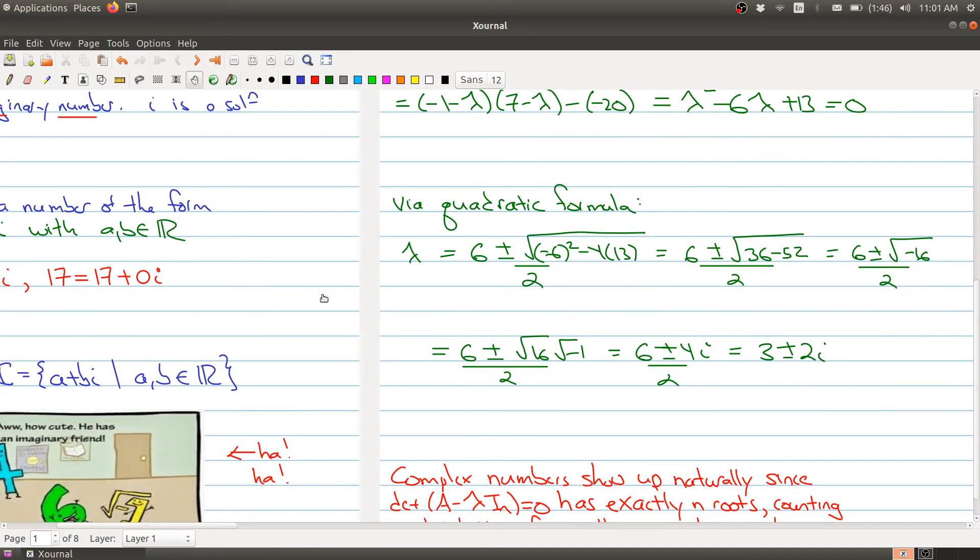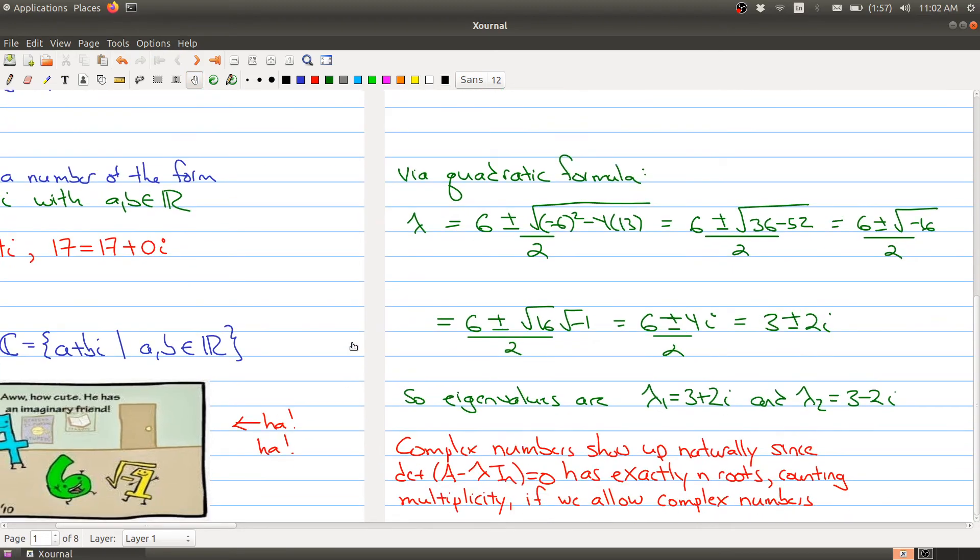So the eigenvalues are complex numbers. Lambda 1 is 3 plus 2i, and lambda 2 is 3 minus 2i.